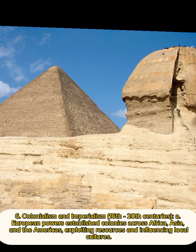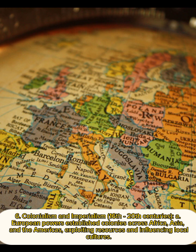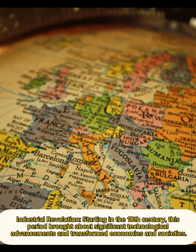Colonialism and Imperialism, 16th to 20th centuries. European powers established colonies across Africa, Asia, and the Americas, exploiting resources and influencing local cultures. The Industrial Revolution, starting in the 18th century, brought about significant technological advancements and transformed economies and societies.